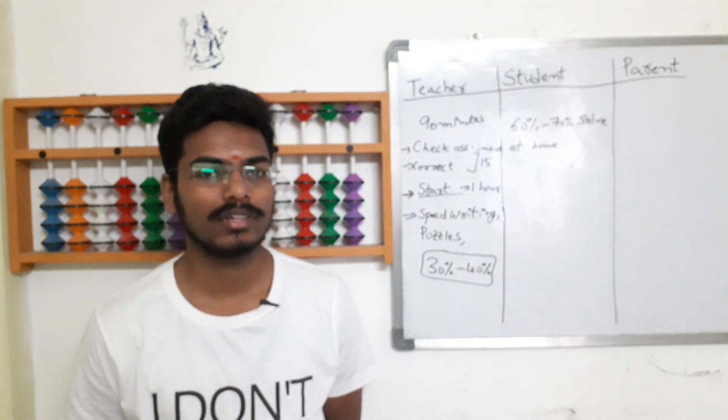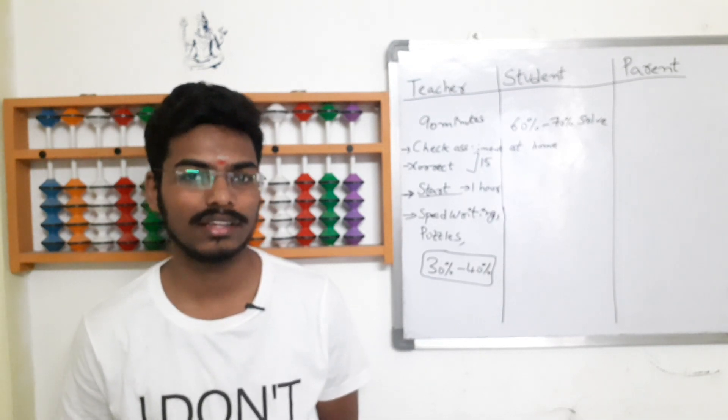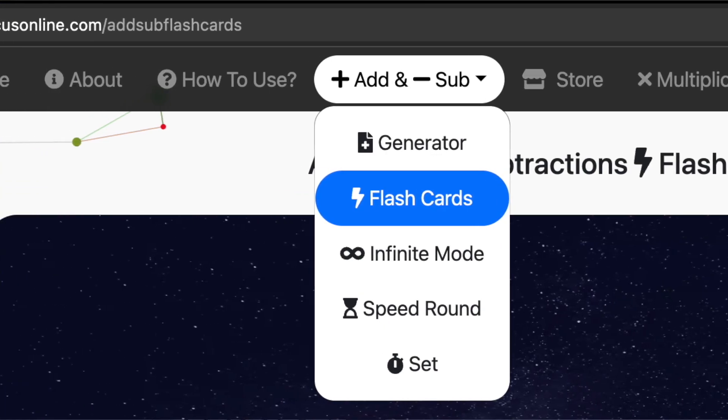So 1 plus 3 plus 6, the answer is 10. So dictate the questions and students will write the answers in the book. And later you can check the answers. So how to generate the questions?